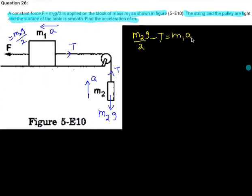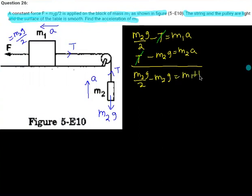Similarly for m2, if I write the equation, then m2 will move up to the upper, then T minus m2g is equal to m2a. So if I add these equations, then we get that the tension cancels and we have m2g by 2 minus m2g is equal to m1 plus m2 into a.